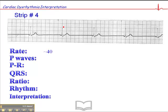So if we do a manual calculation, we take a QRS that falls on a dark line. And the heart rate here is 300, 150, 75, 60, 50, 43, and 37. So somewhere between 43 and 37.